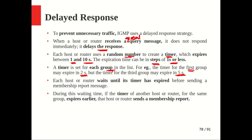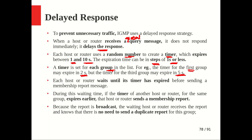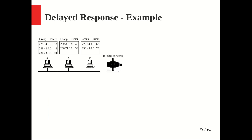Each host or router waits until its timer expires before sending a membership report. During this waiting time, someone with a smaller random number will expire earlier. When that host sends a membership report, it is broadcast across the network. All other waiting hosts or routers for the same group then receive the report and cancel their own timers, knowing there is no need to send a duplicate report.